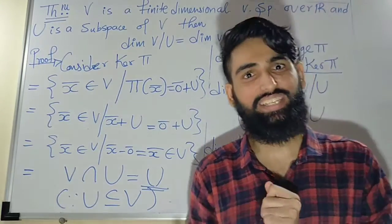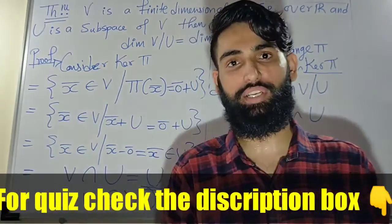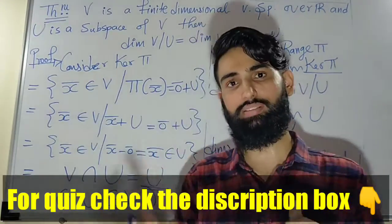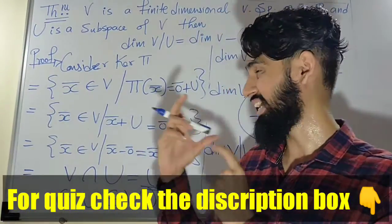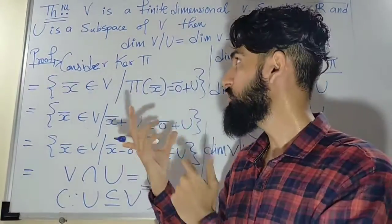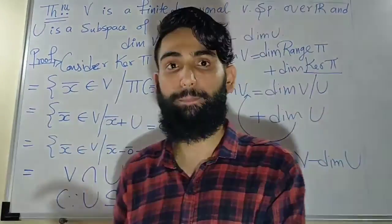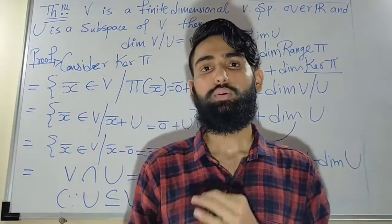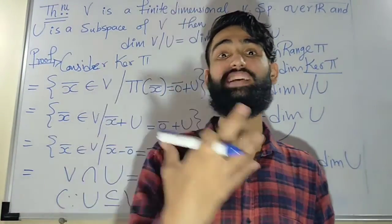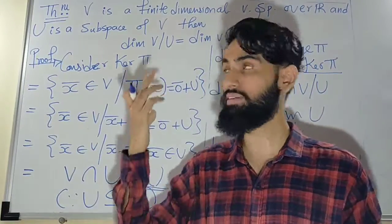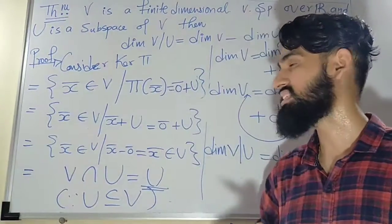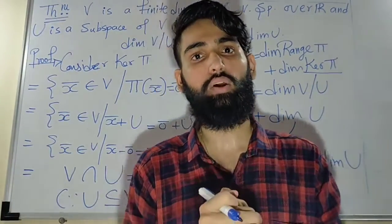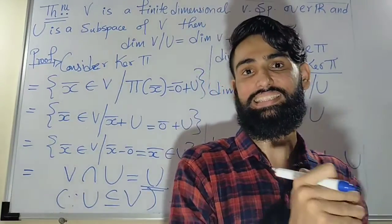Since V/U is a vector space, it was natural to ask what its dimension is. At the end of this section — when I complete the quotient map topics — I will be doing a theorem which also talks about the basis elements, and at the same time I will cover something similar.